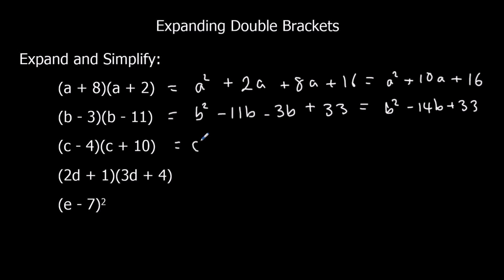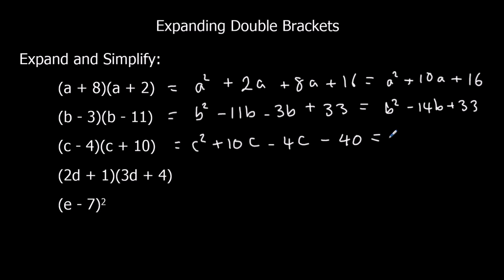c times c is c squared. c times 10 is 10c. Minus 4 times c is minus 4c. And minus 4 times positive 10 is minus 40. Simplifying: 10c minus 4c is 6c. So the final answer is c squared plus 6c minus 40.